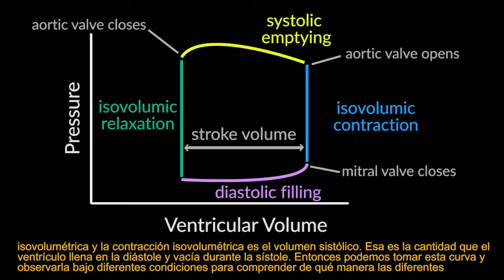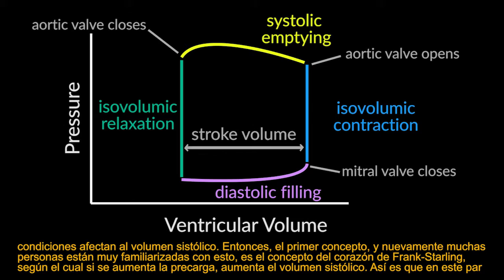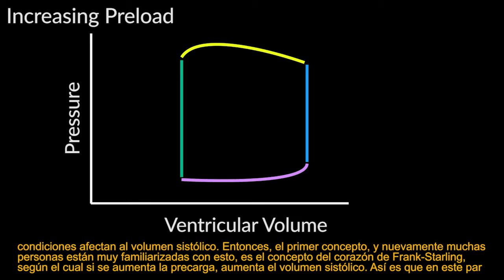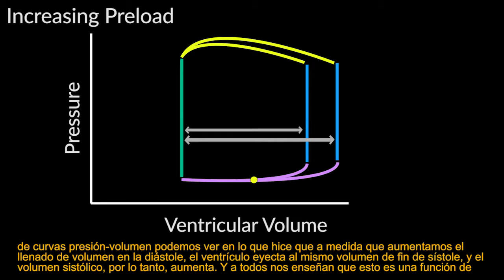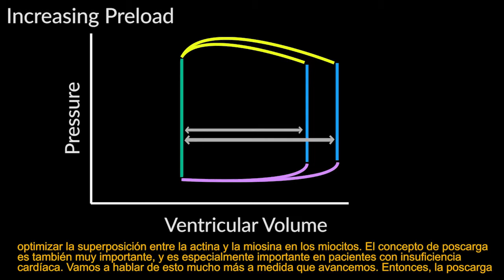We can look at this loop under different conditions to understand how they affect stroke volume. The Frank-Starling concept: if you increase preload, you increase stroke volume. As diastolic filling volume increases, the ventricle ejects to the same end-systolic volume, so stroke volume increases. This is a function of optimizing overlap between actin and myosin in the myocytes.